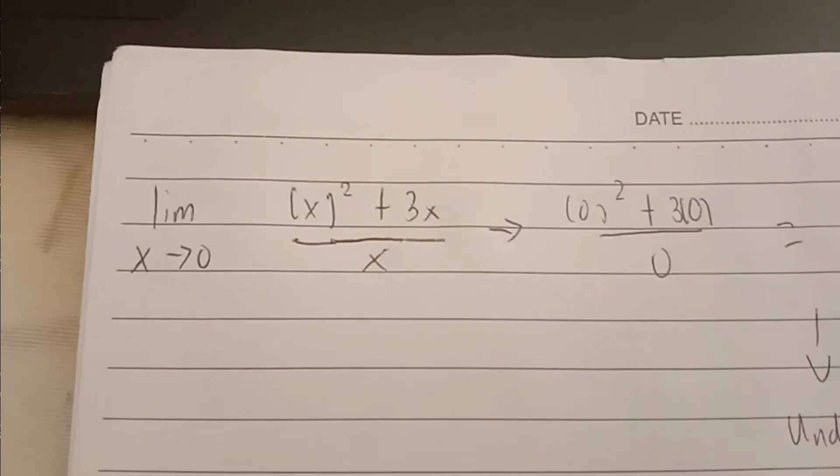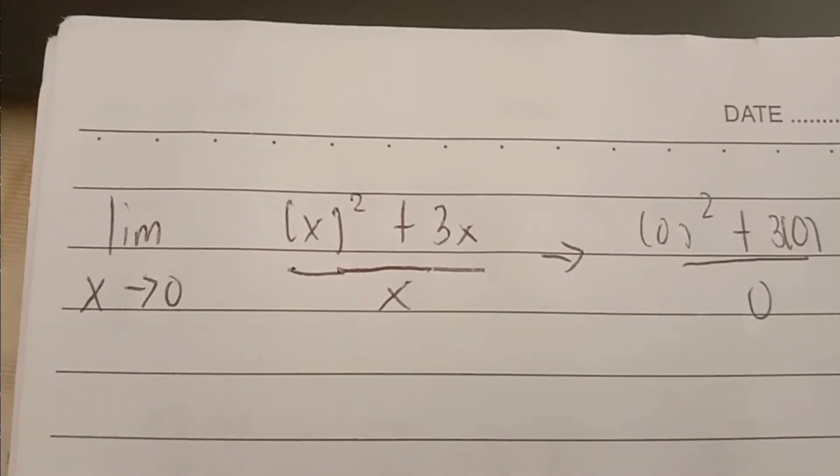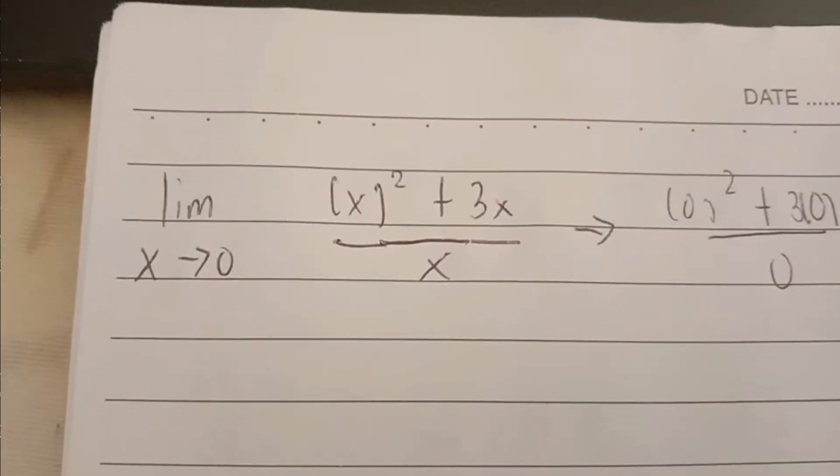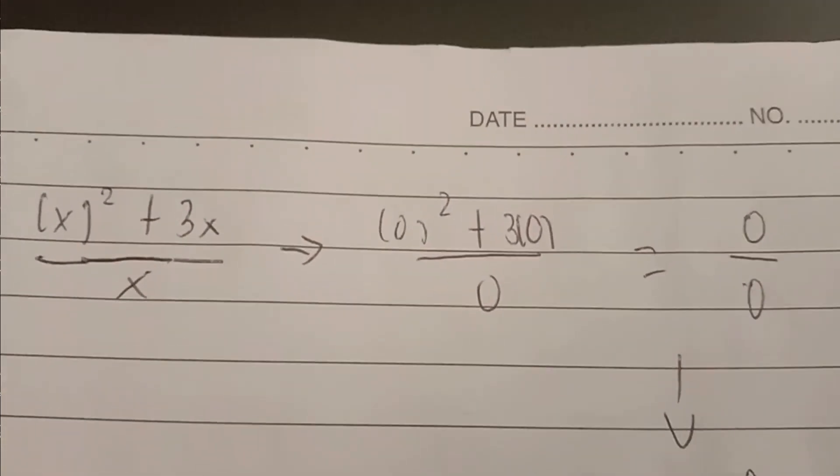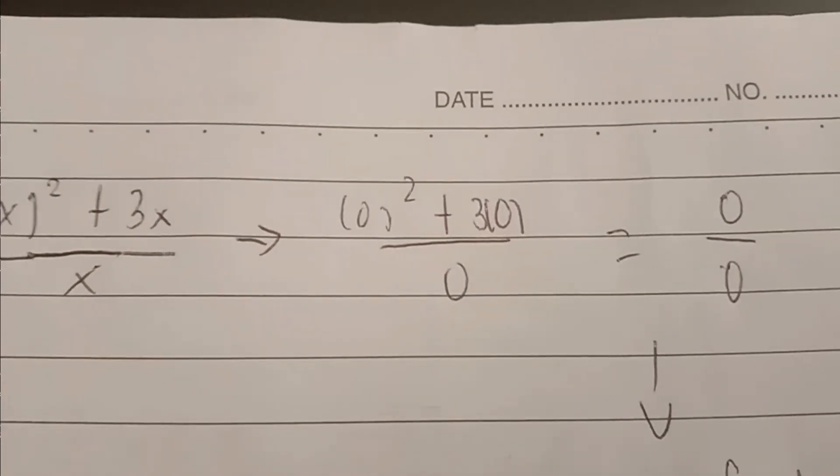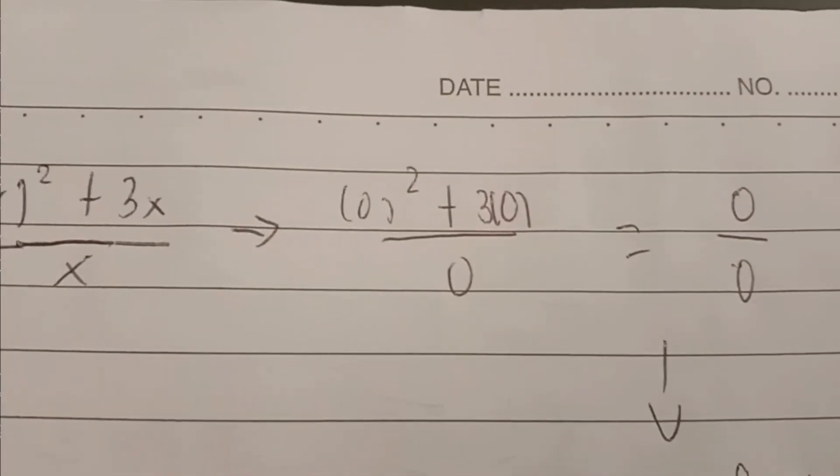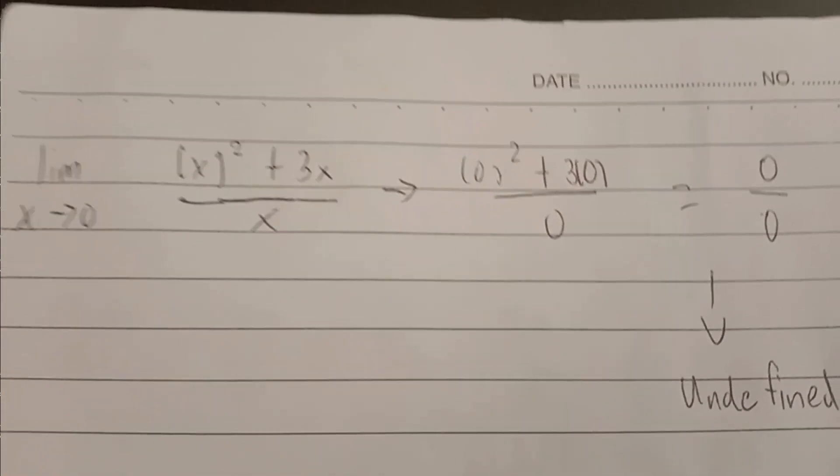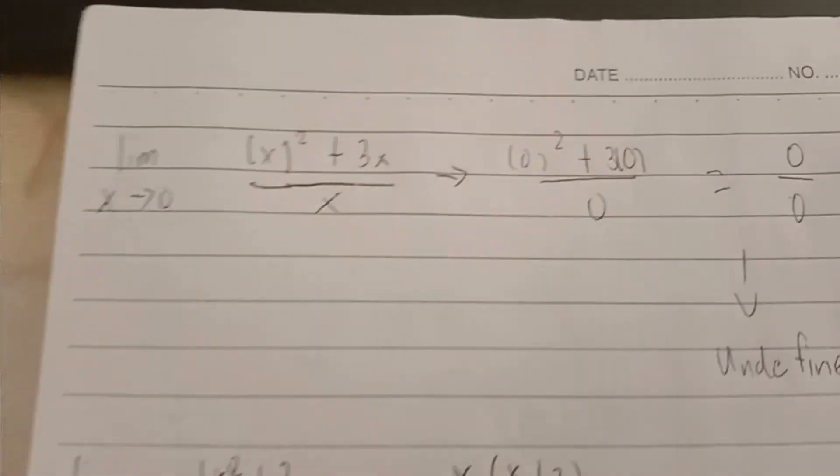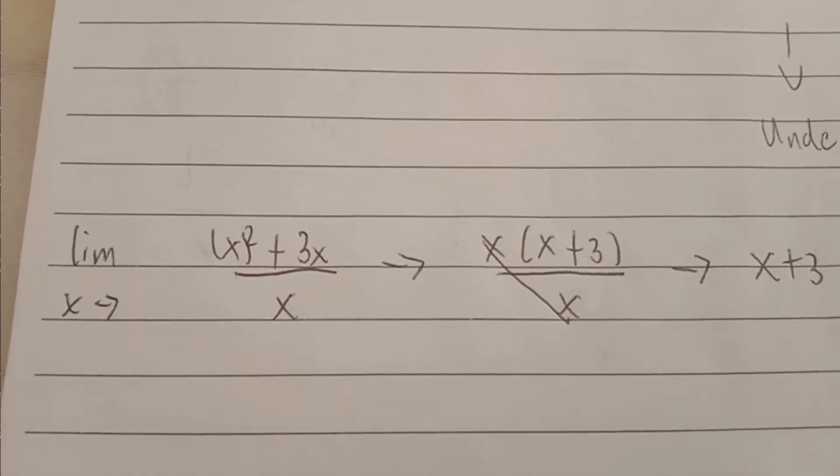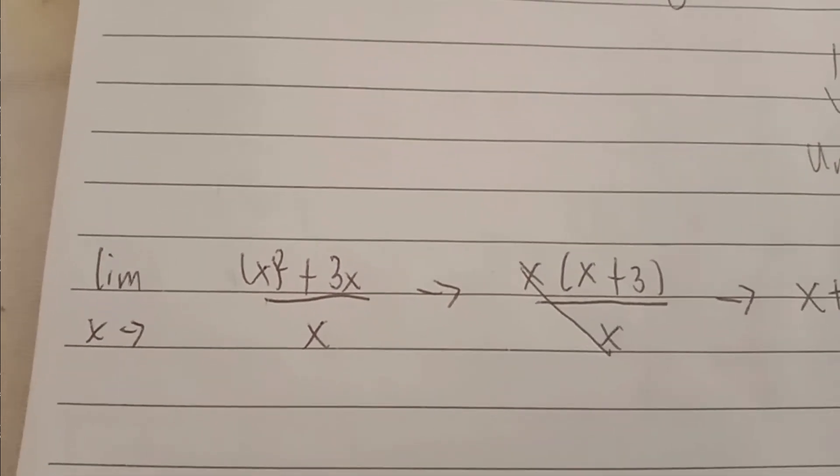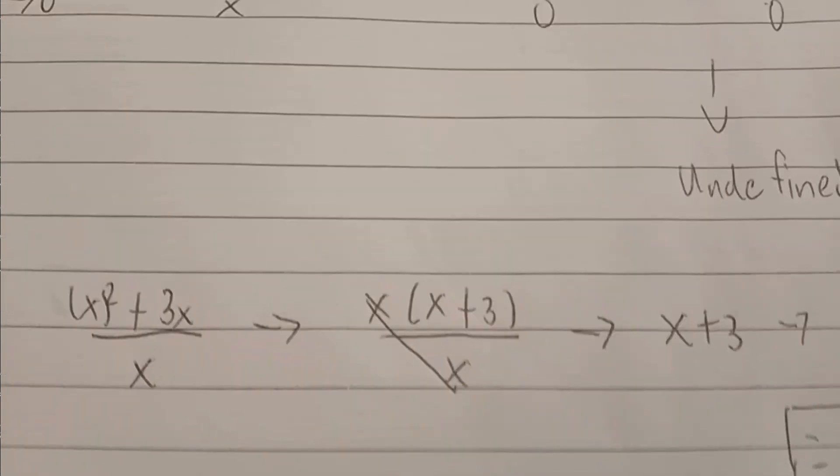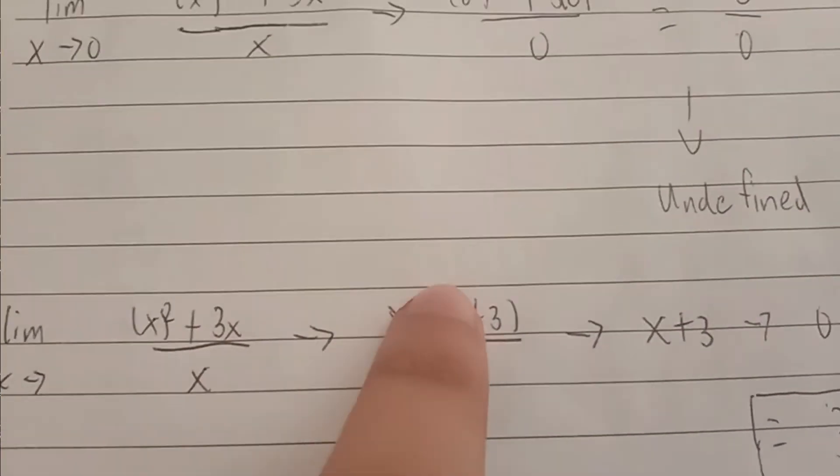So the equation that the teacher has given to me is x raised to 2 plus 3x over x as x approaches 0. So what I did is I substitute in the values. So I got 0 squared plus 3 times 0 over 0 is equal to 0 over 0 or undefined. Now, we can't have an undefined answer. So what I did is I did the factoring method, which we're going over here. So what I did is I factor out the x squared plus 3x and I get x times x plus 3 over x. Since we have two x, we have to cross them out to get x plus 3.